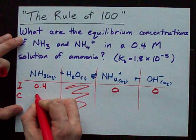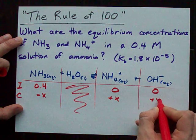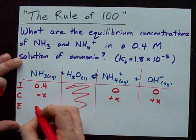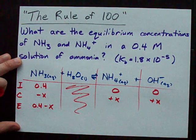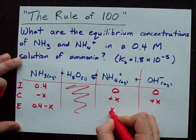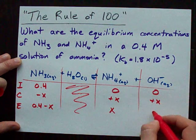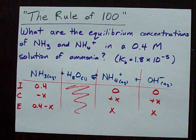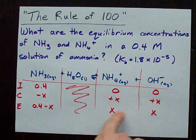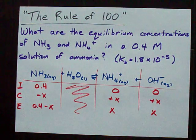The change. We lose some ammonia, we gain ammonium and hydroxide. So our equilibrium concentrations are 0.4 minus some amount x. Our equilibrium concentration of ammonium is 0 plus x and our equilibrium concentration of hydroxide is also 0 plus x. These are the expressions that get plugged into our Kb expression.